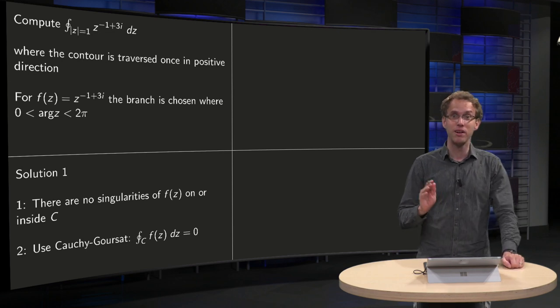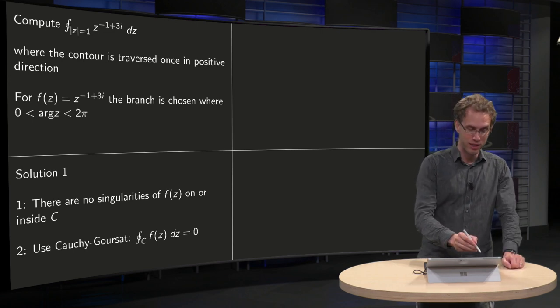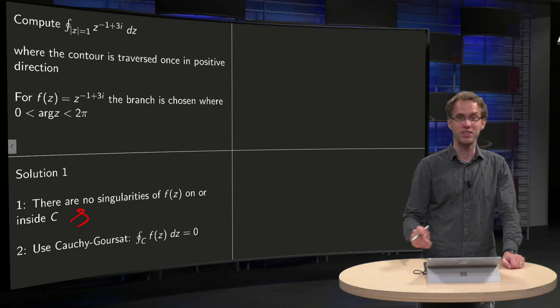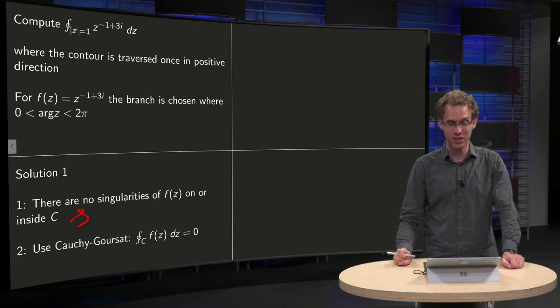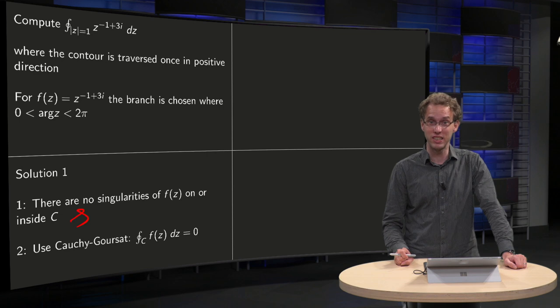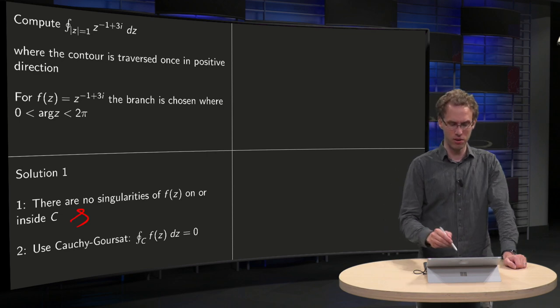It is subtle, but the answer is wrong. This part is correct: there are no singularities of f(z) on or inside C. So why is this wrong?